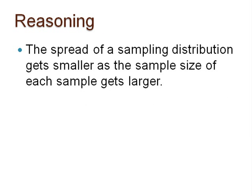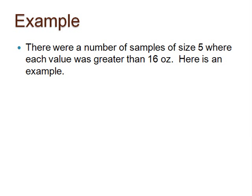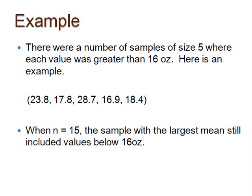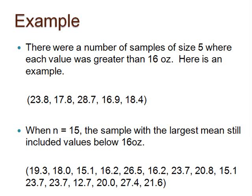There is a logical reason that the spread of the sampling distribution gets smaller as the sample size gets larger. We could look at the 1,000 samples of size 5 and size 15. There were a number of samples of size 5 where each value was greater than the population mean of 16 ounces. However, when n equals 15, the sample with the largest mean still included values below 16 ounces. Thus, there is more potential for variation from samples of size 5 than samples of size 15, and the 1,000 means from samples of size 5 are more spread out.